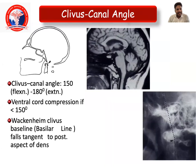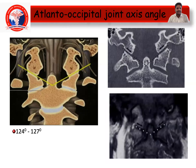The Clivus-Canal angle is 150 degrees in flexion and 180 degrees in extension; ventral cord compression occurs at less than 150 degrees. The Wackenheim-Clivus baseline falls tangential to the posterior aspect of the dens. The normal atlanto-occipital joint axis angle is around 124 to 127 degrees, measured on coronal images.